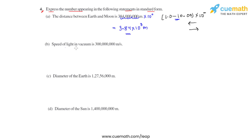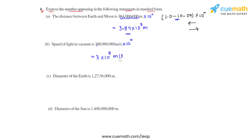Coming to part B, we have been given the speed of light in vacuum. Following the same steps as part A, we keep a decimal here and multiply by 10 raised to 0. The decimal is to be moved between 3 and 0, and counting the places towards left gives us 8. So we write it as 3 × 10⁸ meters per second, which is the speed of light in vacuum in standard form.